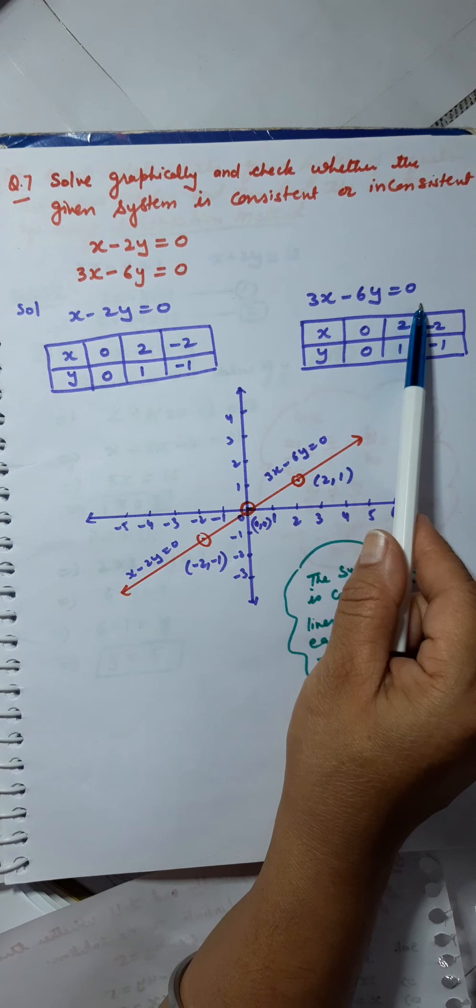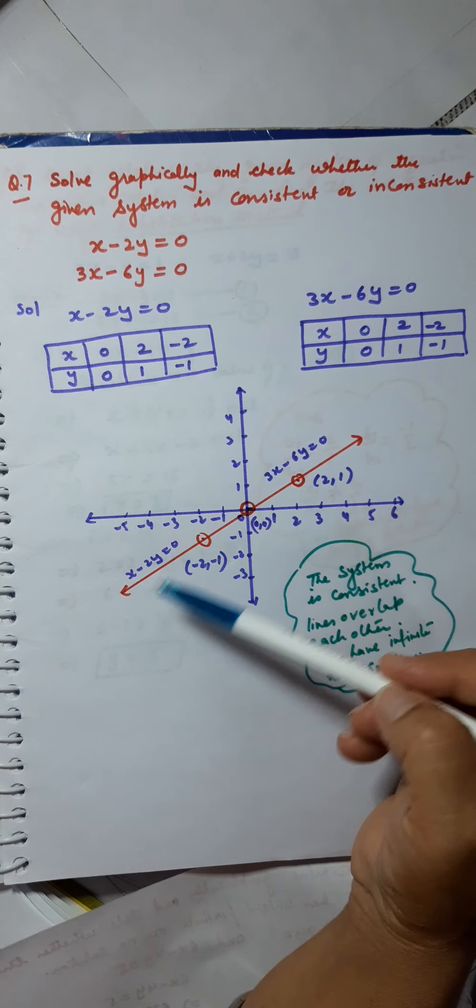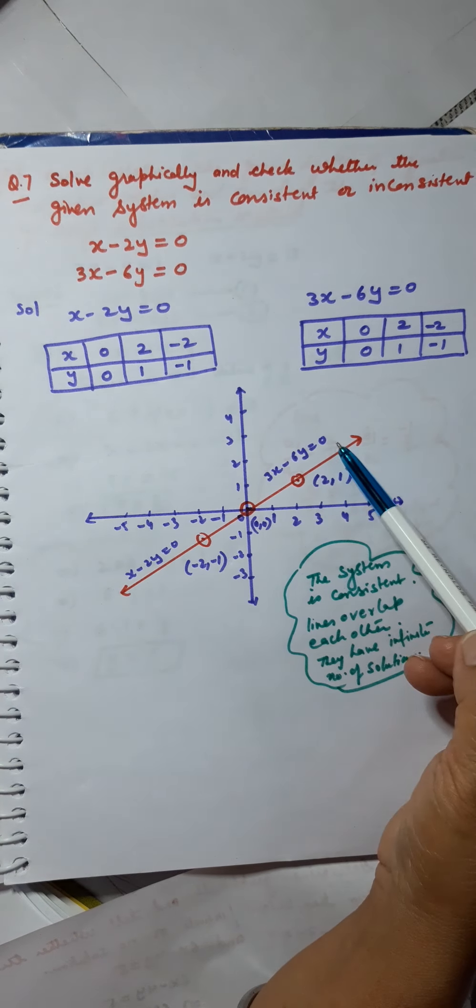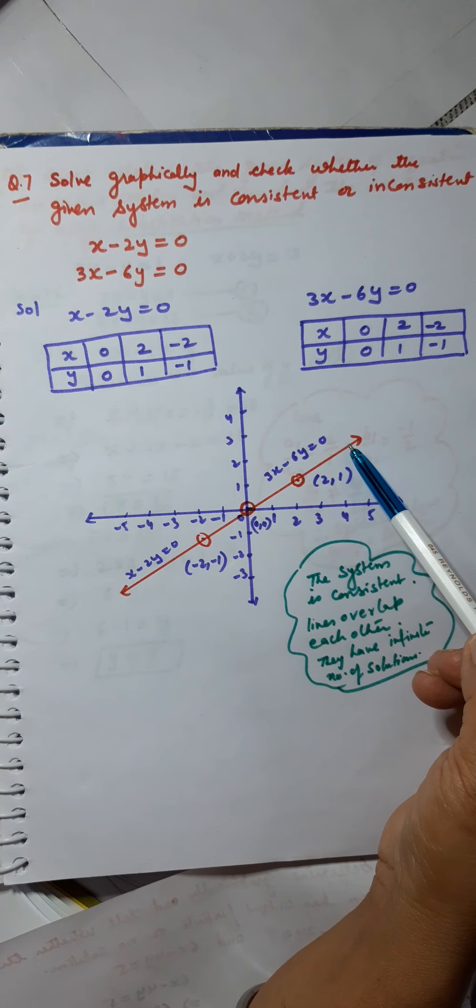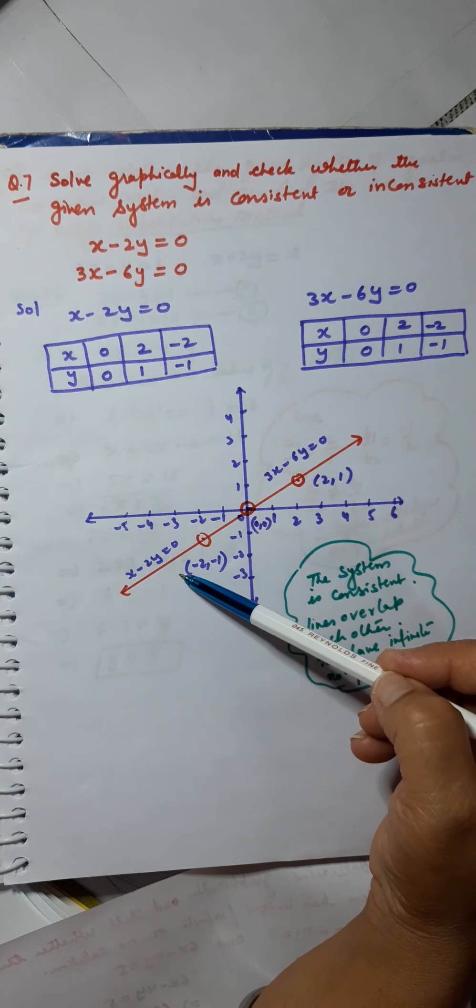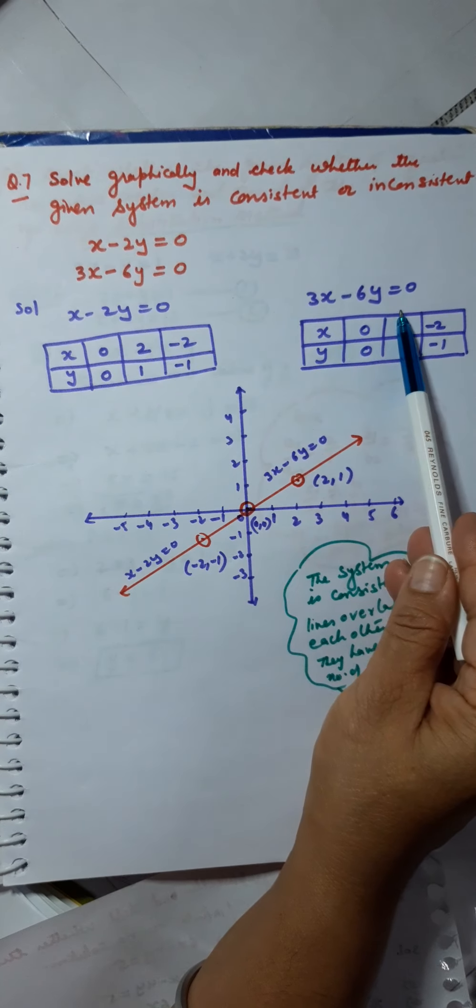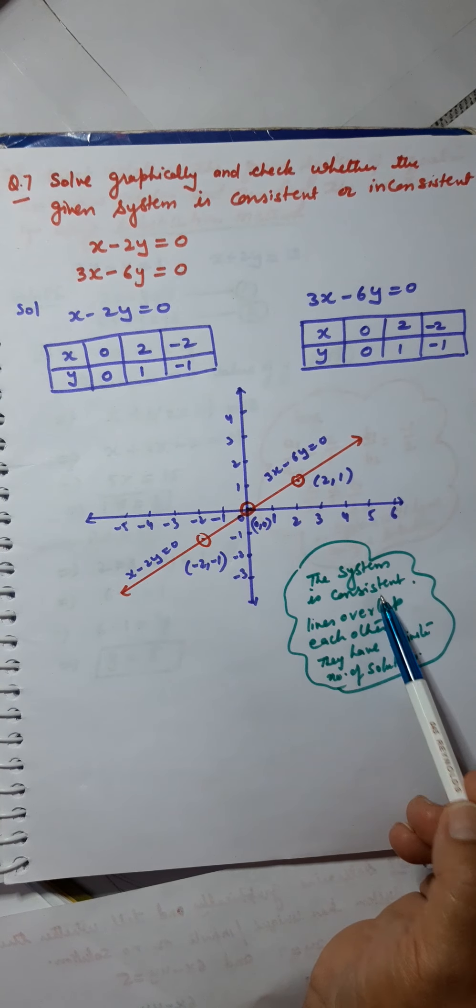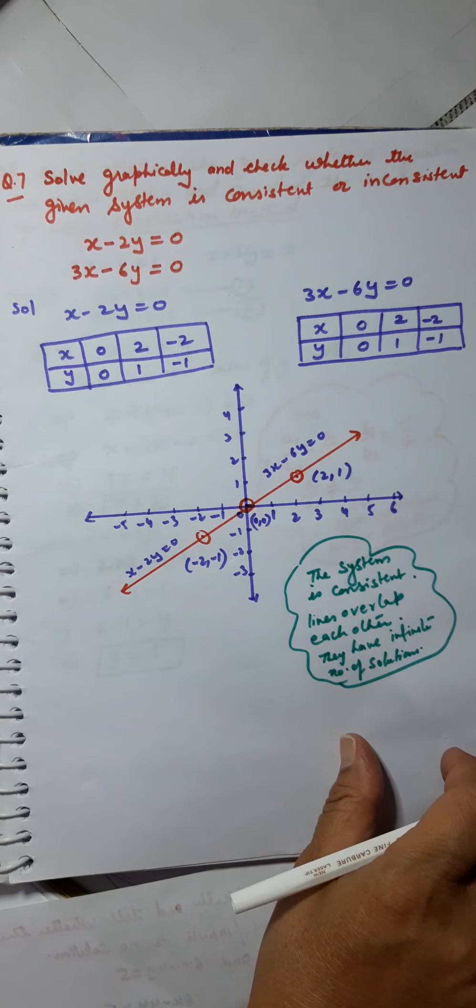Similarly, here 3x minus 6y equals 0 gives me this set of solutions. On plotting, I notice that I get this graph for both equations. The lines are coincident over each other, so it means it has infinitely many solutions. Whatever value of x and y will satisfy this equation will also satisfy this. In short, we can write the system is consistent. The lines overlap each other and they have infinite number of solutions.